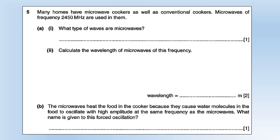Moving on to question 5: many more homes have a microwave cooker as well as a conventional cooker. Microwaves have a frequency of 2450 megahertz. What type of waves are microwaves? They're a part of the electromagnetic spectrum, so they're an electromagnetic wave. Calculate the wavelength of microwaves of this frequency: we know the speed of all electromagnetic waves, we know the frequency, so it's fairly straightforward to work out the wavelength. The microwaves heat the food in a cooker because they cause the water molecules in the food to oscillate with high amplitude at the same frequency as the microwaves. What name is given to this forced oscillation? That's clearly resonance, where you get a large amplitude with a frequency match.